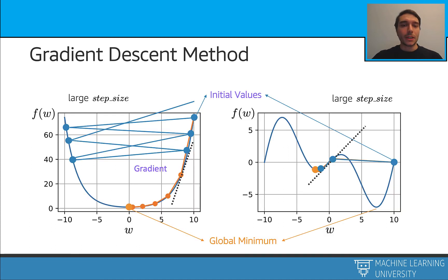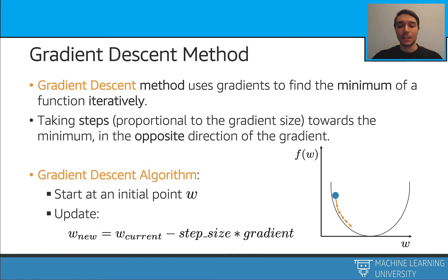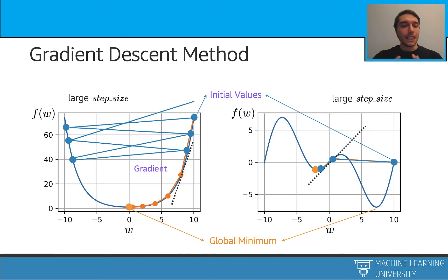Let's talk about the step size. Choosing the step size correctly is critical. If the step size is too small, the training process takes a very long time because we take very small steps each time, requiring a lot of steps to reach the minimum. On the other hand, if you take a very large step size, this will usually overshoot.